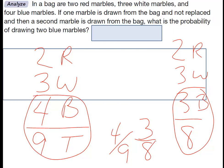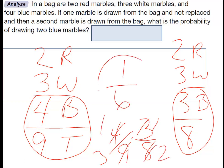The probability of drawing two blue marbles is the result of multiplying these two probabilities together: four-ninths times three-eighths. That simplifies — four times three is twelve, nine times eight is seventy-two, and twelve over seventy-two reduces to one-sixth. So one-sixth is our probability of drawing two blue marbles.